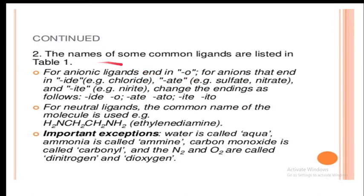The names of some common ligands are listed as follows. For anionic ligands that end in -ide, change the ending to -o. For example, chloride becomes chloro and sulfide becomes sulfo. For anions that end in -ate, such as nitrate, change the ending accordingly.